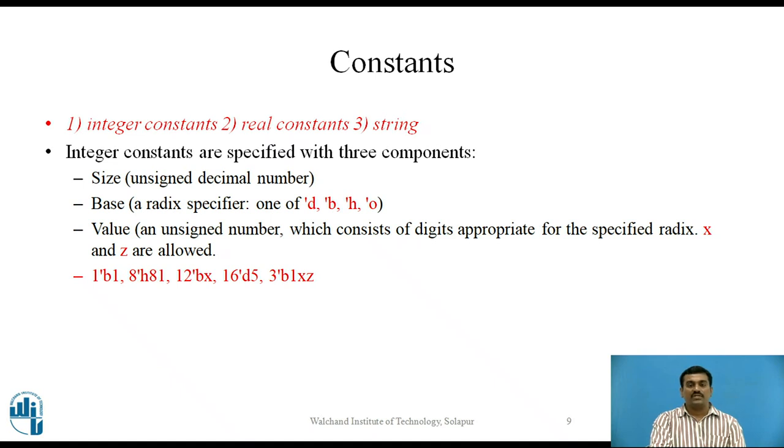Examples are given. First example indicates 1 bit binary number with value 1. Second example declares an 8 bit binary number with value part as binary equivalent of hexadecimal number 81. In the third example, 12 bit binary number is declared where all the bits are x, i.e. have unknown value. Next example declares 16 bit number with value part as binary equivalent of decimal number 5. Last example declares 3 bit binary number with value part as 1xz. That is, the LSB bit is z, the middle bit is x and the most significant bit is 1.